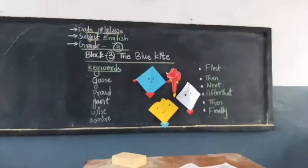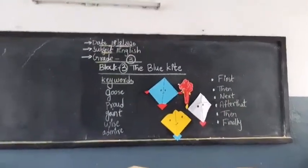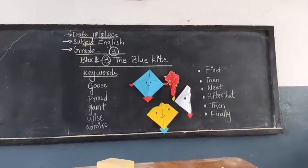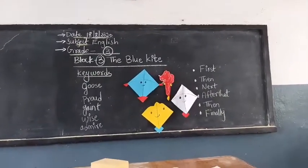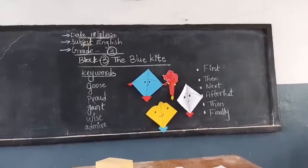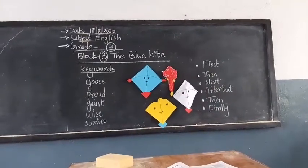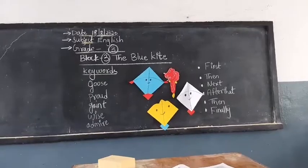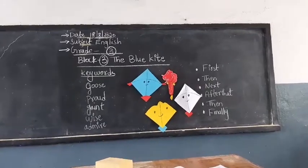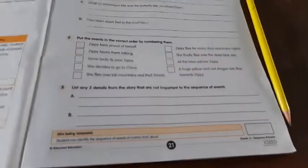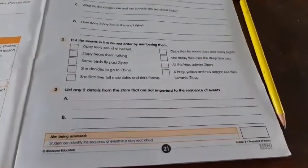So what is the story? Understood children? Today we have studied the sequence. You can see a beautiful blue kite Zippy, a yellow kite, and a beautiful dragon kite. Kindly open your workbook, page number 21. Write today's date: 18-8-2020.